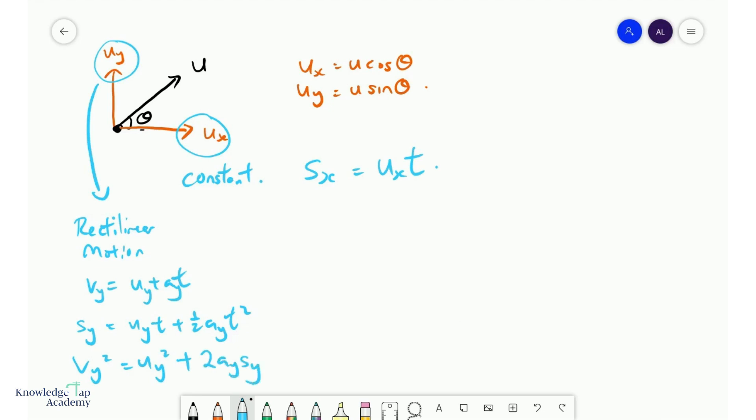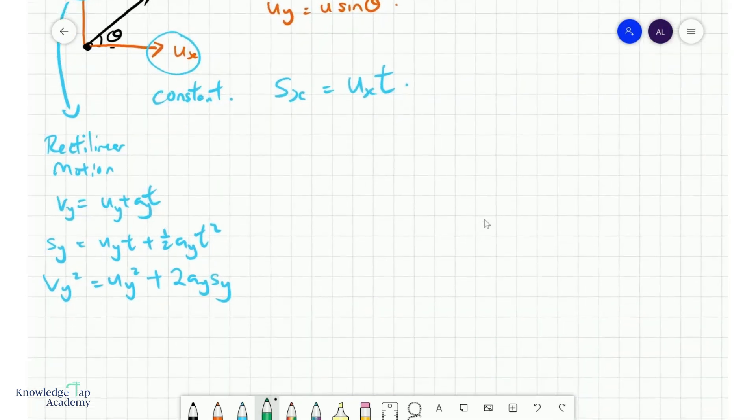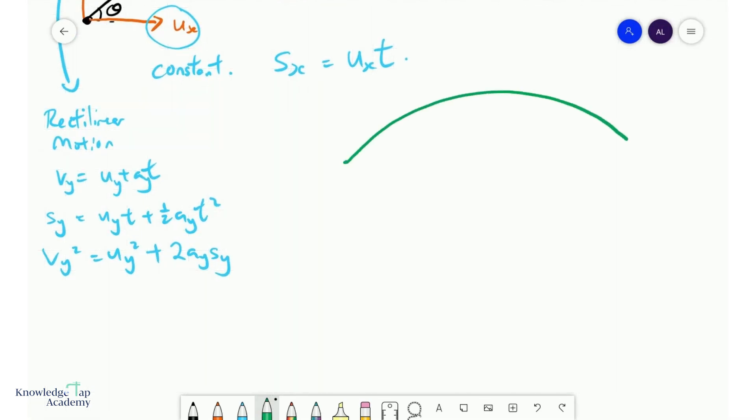Wonderful. So let's see how we can use these equations together. Now, let us consider a very simple projectile motion. Let's say we've got something that just goes from here to here. I launched it at the initial velocity u at an angle theta to the horizontal.